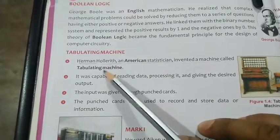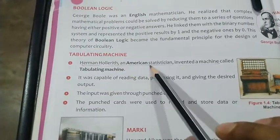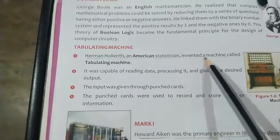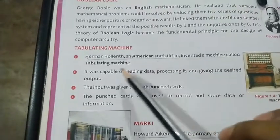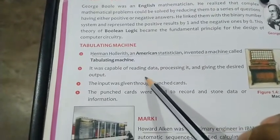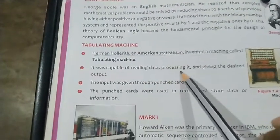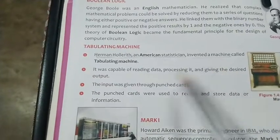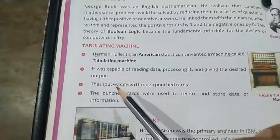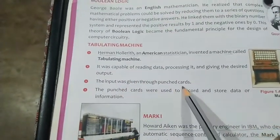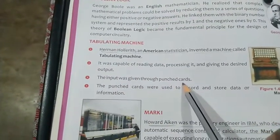The next machine, known as the tabulating machine, was developed by Herman Hollerith, an American statistician, who invented a machine capable of reading data, processing it, and giving the desired output. The input was given through punch cards.